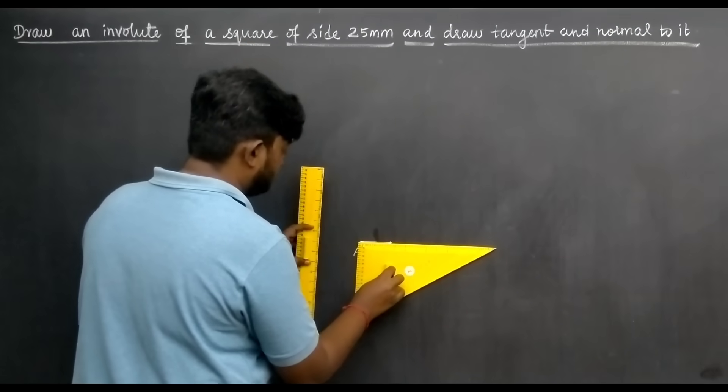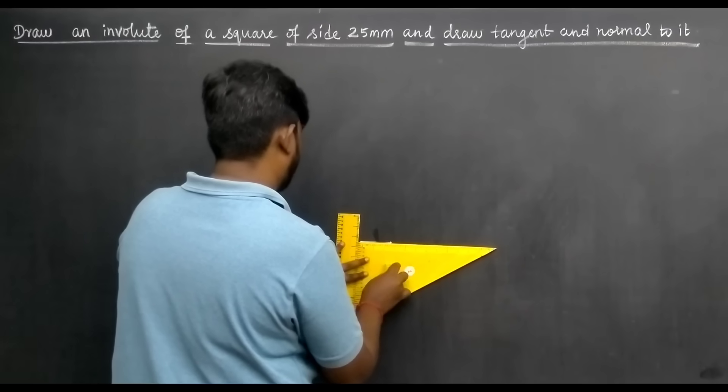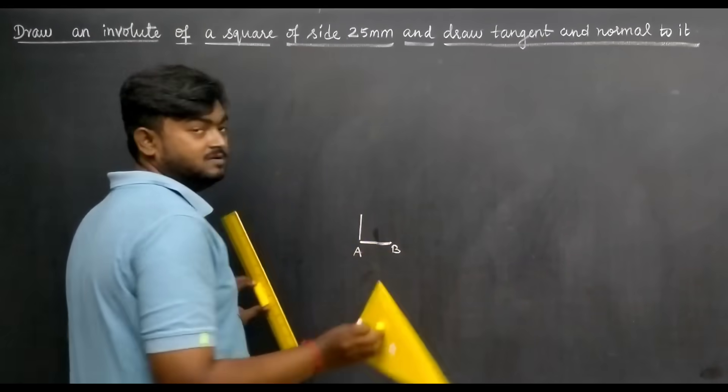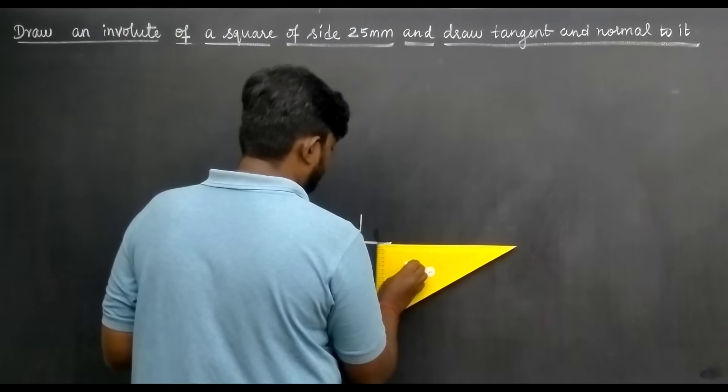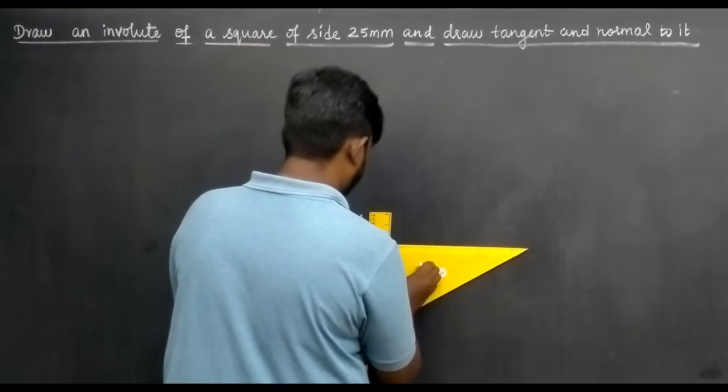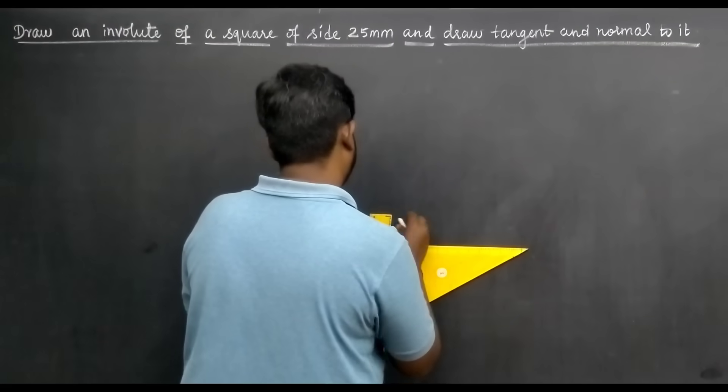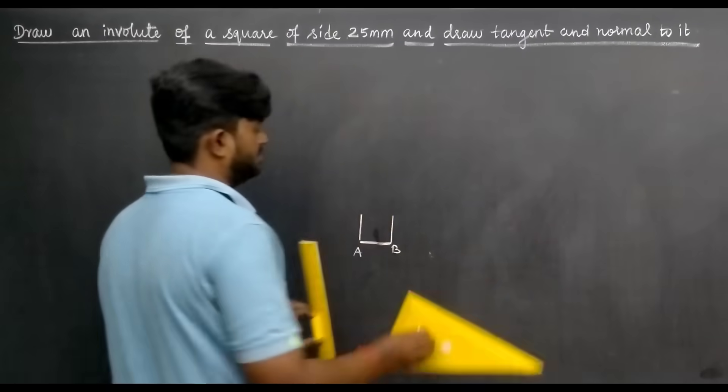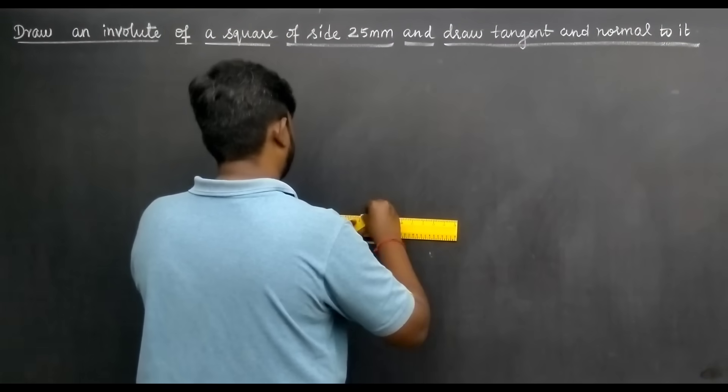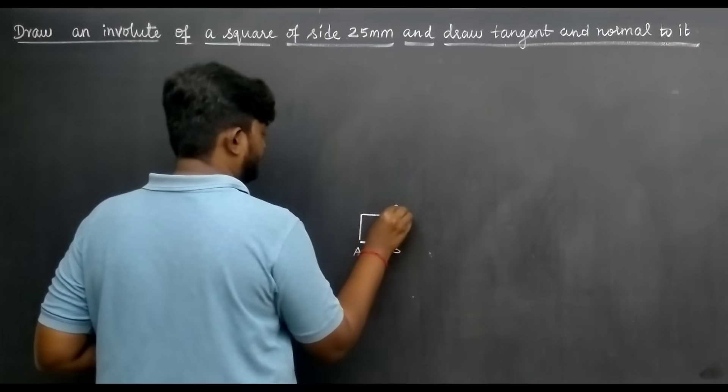Next, take the set square and position it. Then draw 2.5 centimeter vertically. Next, using normal scale, join the points. So all sides are 2.5 centimeter: A, B, C, D.